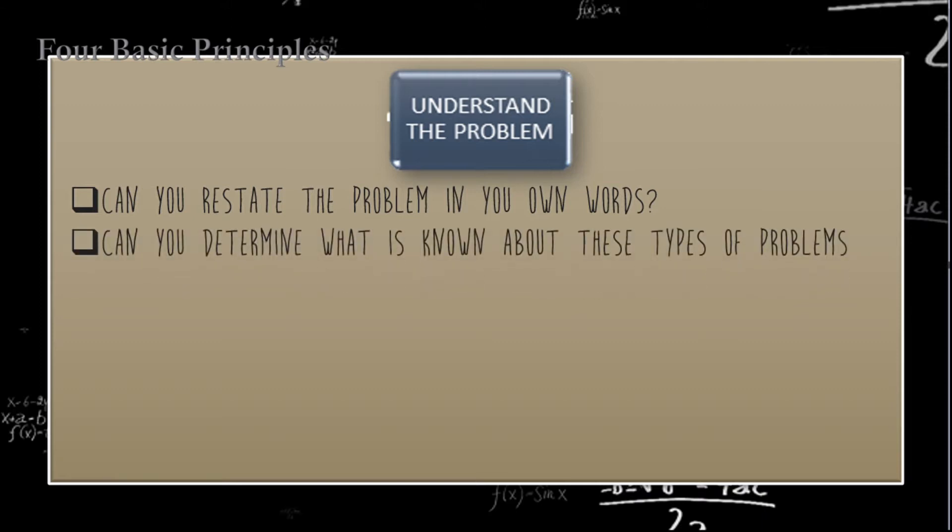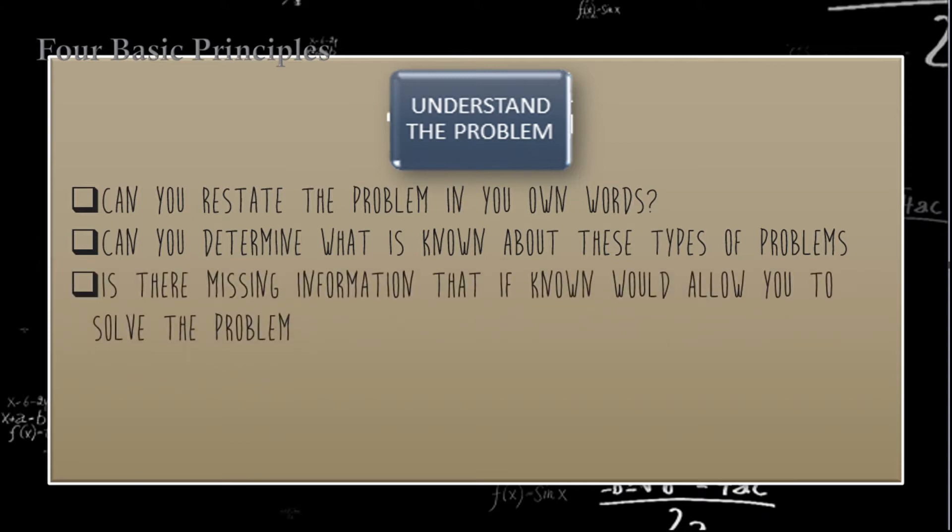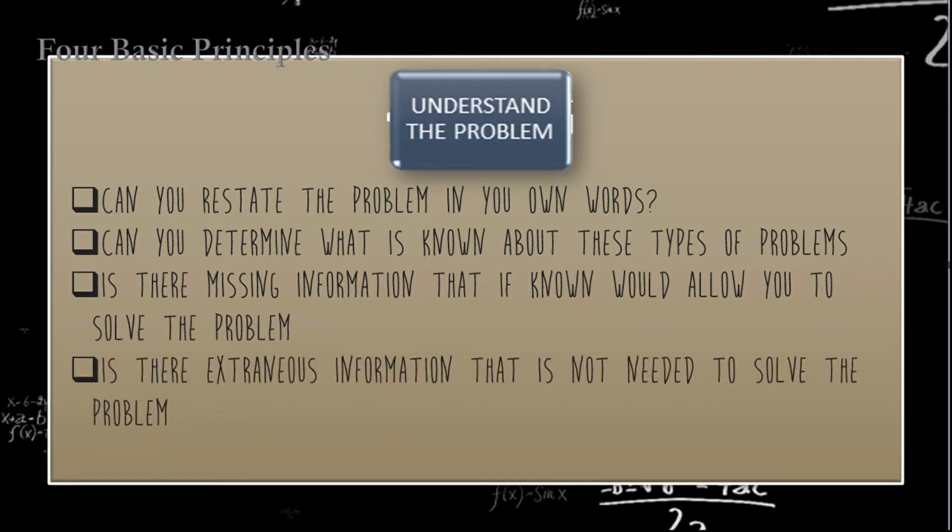Can you determine what is known about this type of problem? It is to identify what type of problem it is. Is there missing information that if known, would allow you to solve the problem? It means you need to think carefully in order to solve the problem. Is there extraneous information that is not needed to solve the problem? Some are just unimportant information. And what is the goal? What do we need to solve and find in the problem?